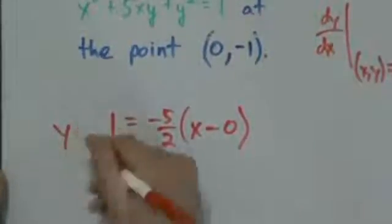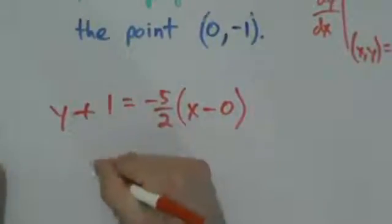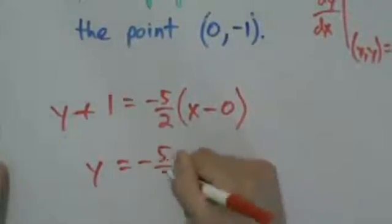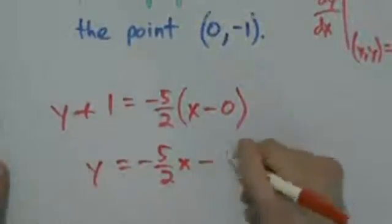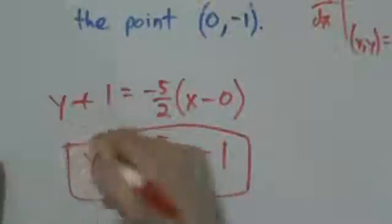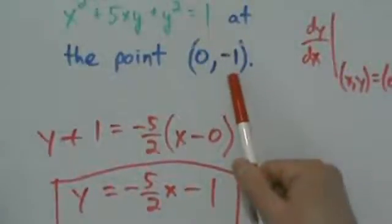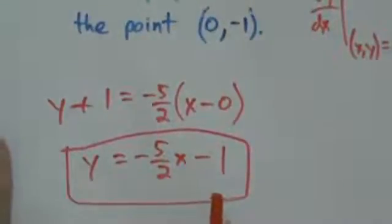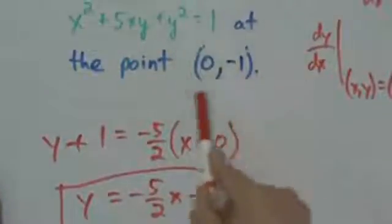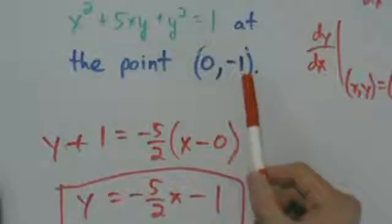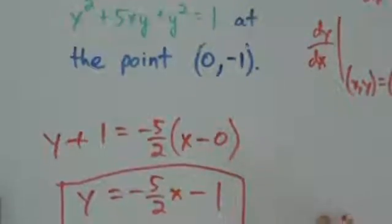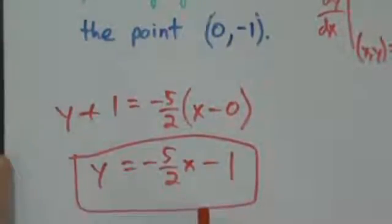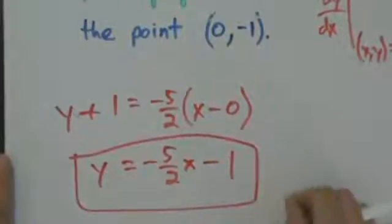So that's y plus 1 equals negative 5/2 times x. Distributing and subtracting 1 from both sides gives us the equation of the tangent line. You might think that since the point is (0, -1) we could just use slope-intercept form, and yes we could, but in general you won't have such a nice point. You might have something like (2, -3), so you'll need to use point-slope form. It doesn't matter how you get there as long as your method and answer are correct.